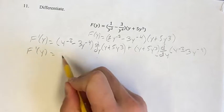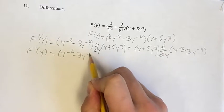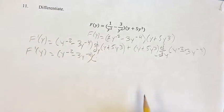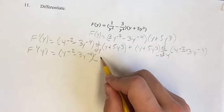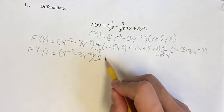So for this first term we have y to the negative 2 minus 3y to the negative 4. And the derivative of this, we have a linear term right here, so its derivative is just its coefficient, which is 1 plus 5.